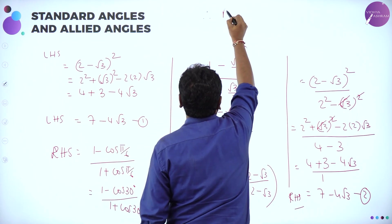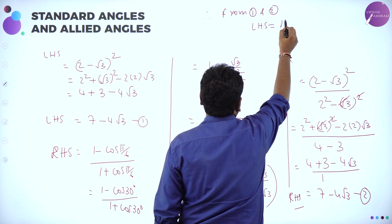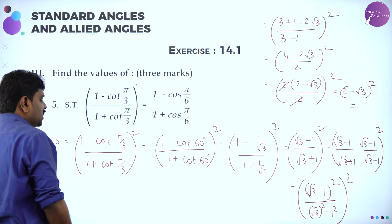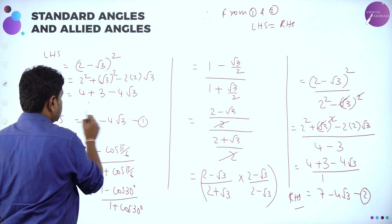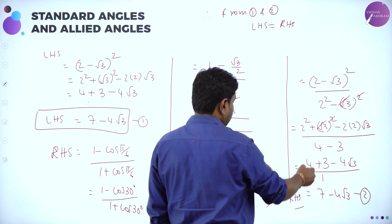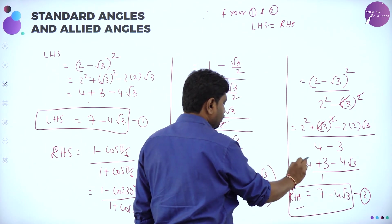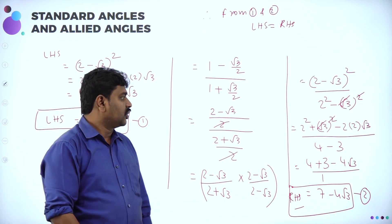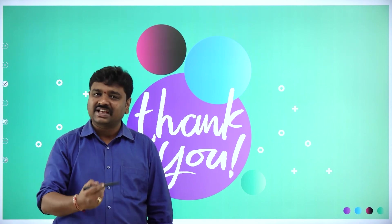So from equations 1 and 2, LHS = 7 − 4√3 and RHS = 7 − 4√3, therefore LHS = RHS, hence proved. I took LHS as (1 − cot(π/3))/(1 + cot(π/3)) and arrived at 7 − 4√3. RHS also gives 7 − 4√3. So LHS = RHS. I hope all of you understood. Please practice the same problems. I will see you in my next session. Thank you.